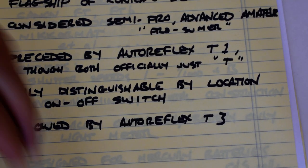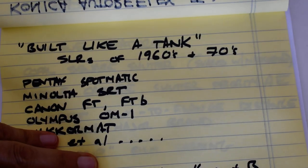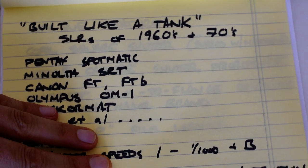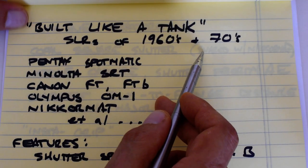Okay, so the Autoreflex series belongs to the built-like-a-tank genre of 35 millimeter cameras which were popular during the 1960s and 1970s.